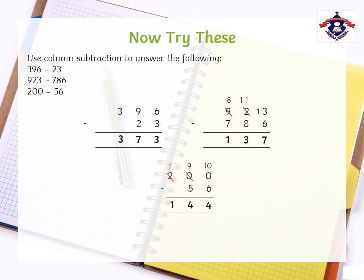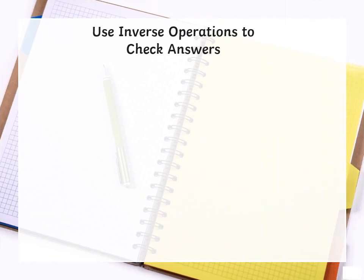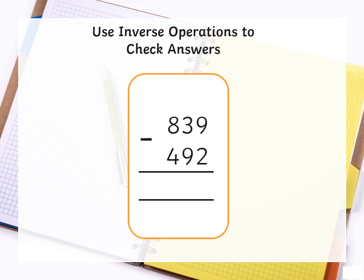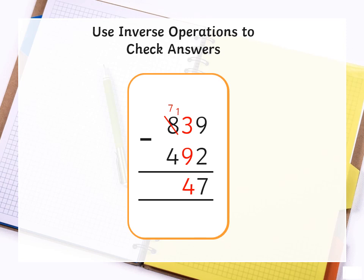Well done my students. Let's use inverse operations to check answers. Keep in mind, you will start the subtraction from the units column. So 9 minus 2 is 7. Now borrowing is needed in this question, so 3 will borrow 1 from 8 and it becomes 13. 13 minus 9 is 4, and now 7 minus 4 is 3. Well done students.